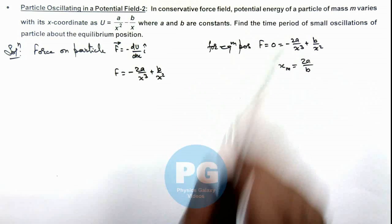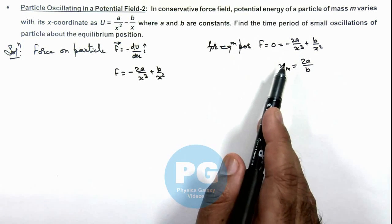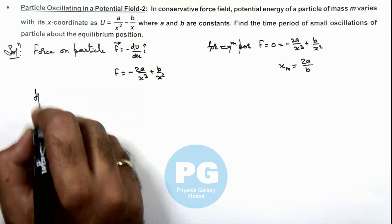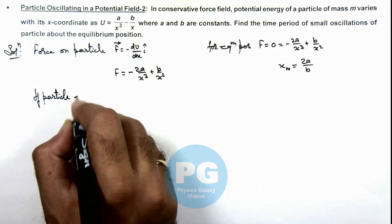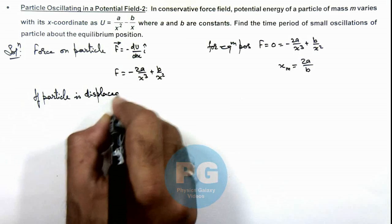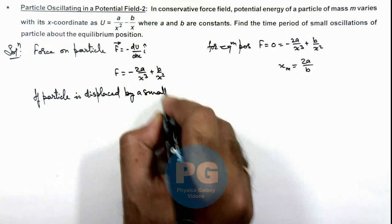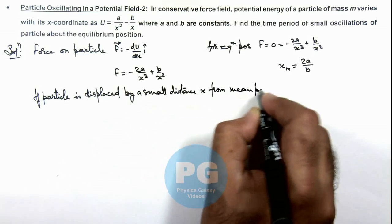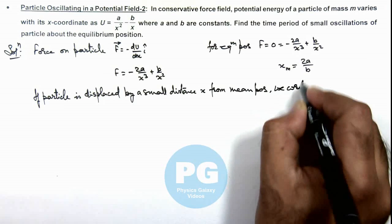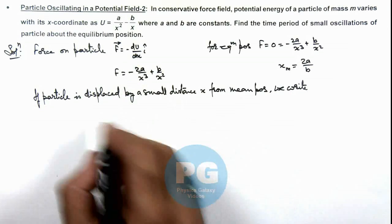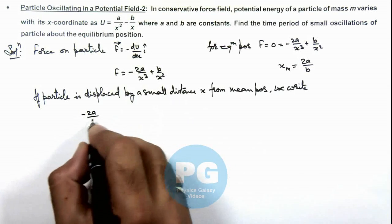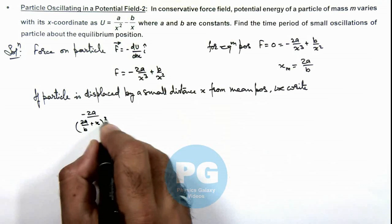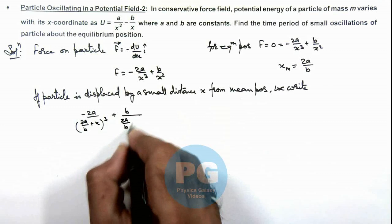We are required to find the time period of these oscillations. We can find the oscillation of a particle at a distance x from this mean position. So if the particle is displaced by a small distance x from the mean position, the force will be given by the original expression where we substitute x as (2a/b + x), giving us minus 2a/(2a/b + x)³ plus b/(2a/b + x)².